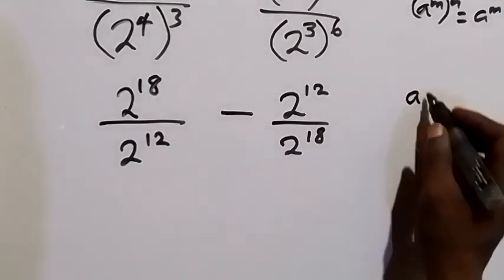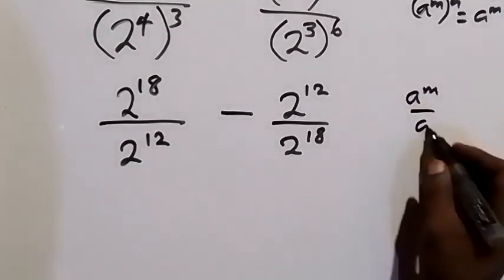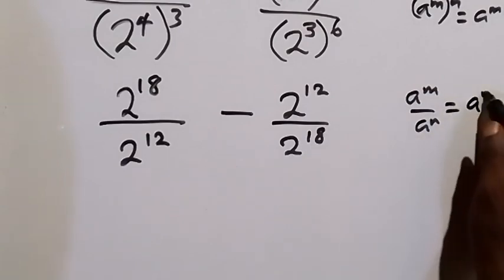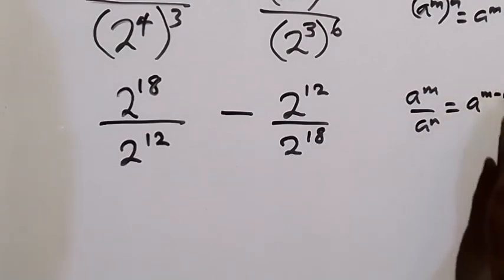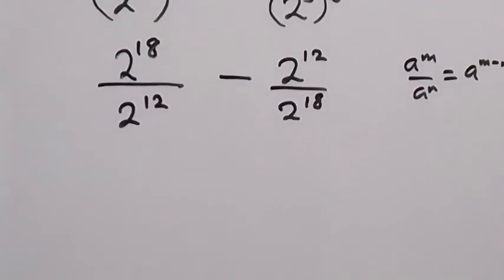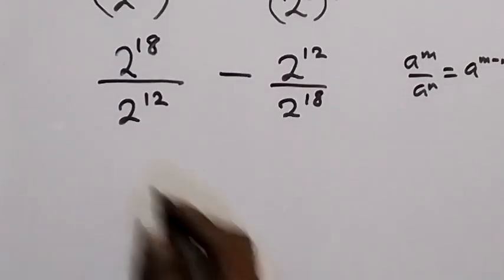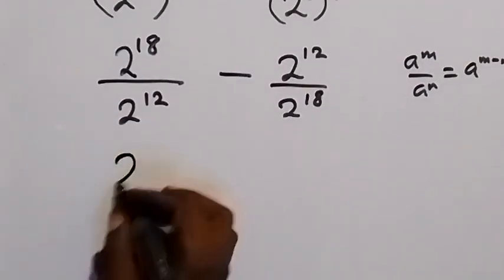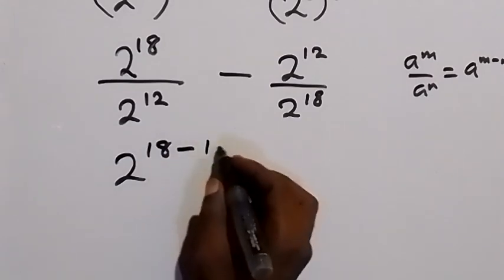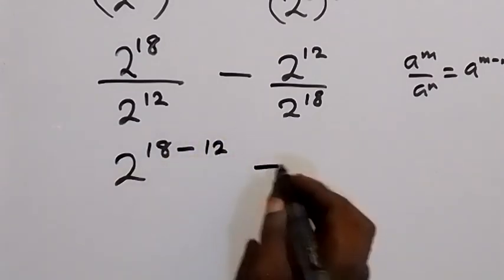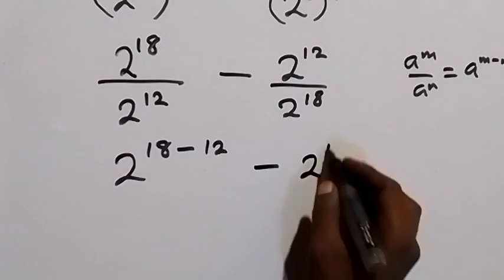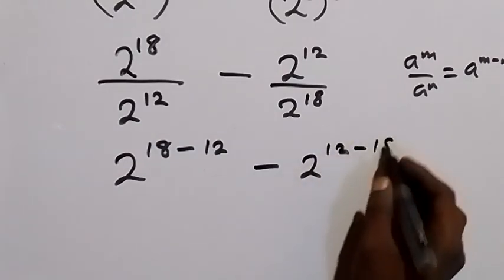When we have a raised to power m divided by a raised to power n, this can be written as a raised to power m minus n. So when we apply that here, this becomes 2 raised to power 18 minus 12, then minus 2 raised to power 12 minus 18.